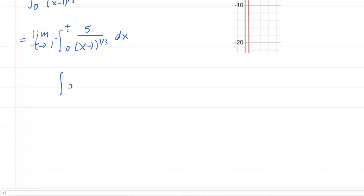We're going to rewrite this by doing 5. And then we're going to do x minus 1 raised to the negative 1 third. And really, to evaluate this, we'd have to do a u substitution. So we will let u equal the x minus 1. And then we differentiate both sides. We get du is equal to 1 dx.